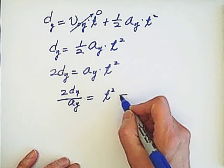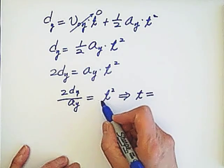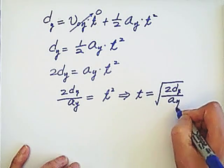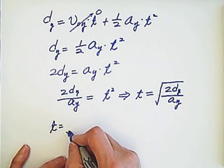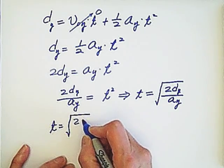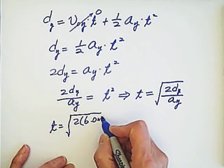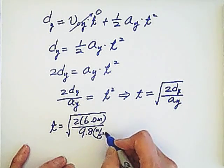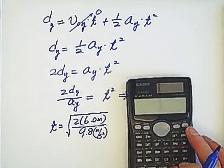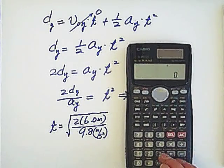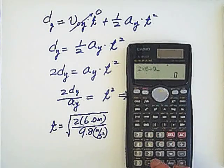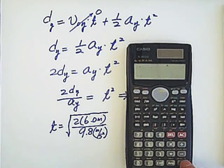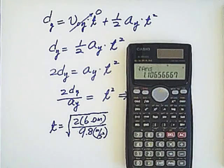So then we're looking for t. t equals square root both sides. We got the square root 2dy over ay. Then we can put number into the formula: 2 times 6 meter over 9.8 meter per second squared. Now we can use calculator to calculate the answer. So we have 2 times 6 divided by 9.8, then we get the square root equals 1.11 seconds.